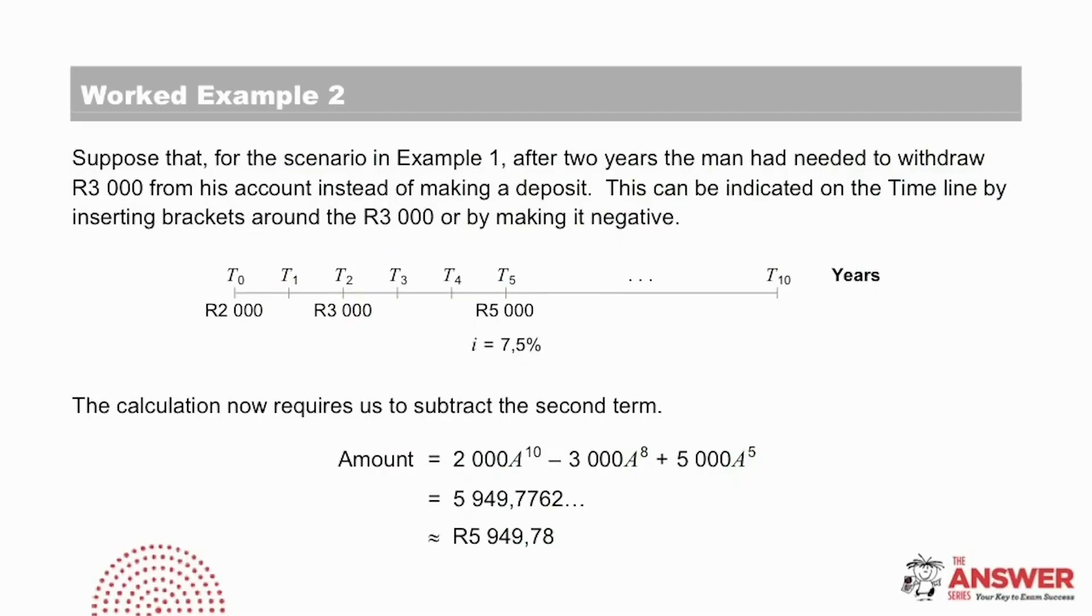This next example is the same as the previous example except for one difference. This time, the man needed to withdraw the R3000 from his account after two years. Let's look at how we show that on the timeline. It can be indicated with a minus sign or alternatively with brackets. We are going to use brackets to indicate a withdrawal in this video series. The important thing is whichever method you use, the distinction between a deposit and a withdrawal must be clear. Note the withdrawal needs to be subtracted. And now we can see that this time, the amount in the man's account at the end of the 10 years is this.